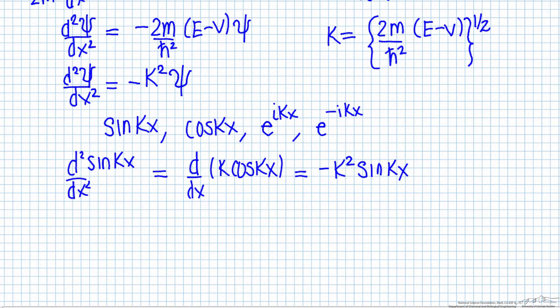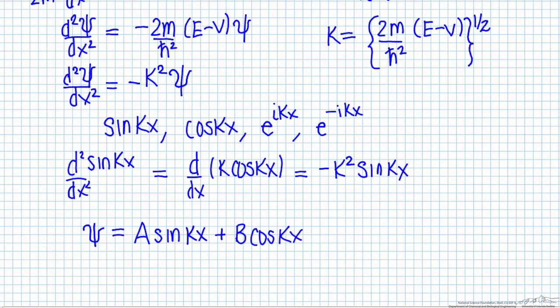You can do the same thing for cosine of kx and show that it too is an eigenfunction of the Schrödinger equation. The general solution is therefore: the wave function equals a constant A times sine of kx plus a constant B times cosine of kx, where A and B are determined by applying boundary conditions. For this free particle, there are no boundary conditions, so A and B are arbitrary.